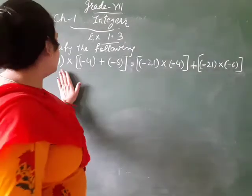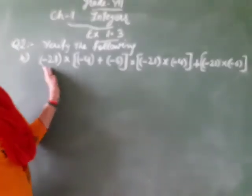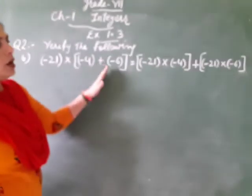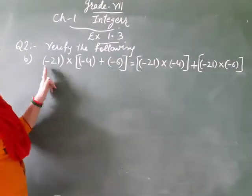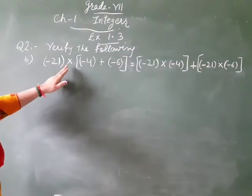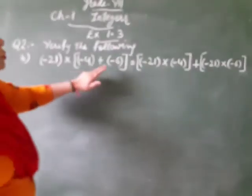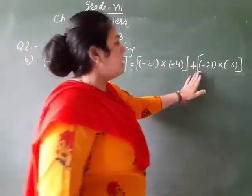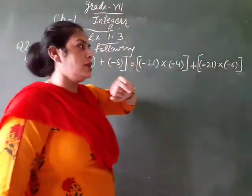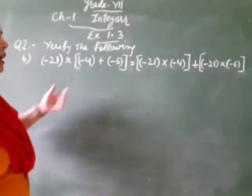Now we discuss part B of the second question. Same as the distributive property is here, but we verify it using numbers. So (-21) × [(-4) + (-6)] is equal to [(-21) × (-4)] + [(-21) × (-6)]. So firstly we are taking left hand side.